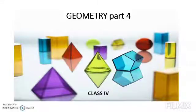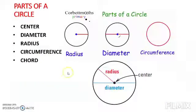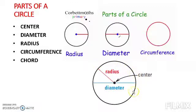Hello students, welcome to Geometry part 4. In this part we will learn about circles. Circles are basic round closed figures and the outermost line which makes a circle is called a circumference.